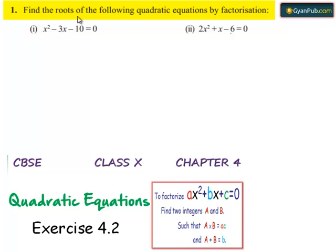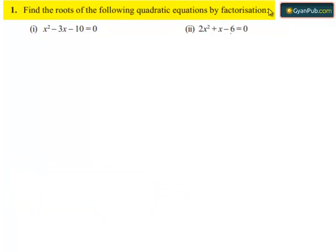Coming to the first problem, find the roots of the following quadratic equations by factorization. The first equation given is x square minus 3x minus 10 is equal to 0.